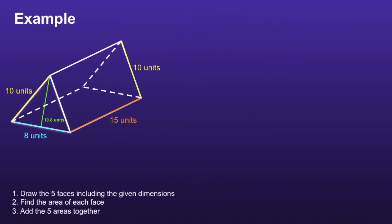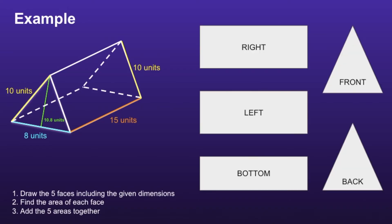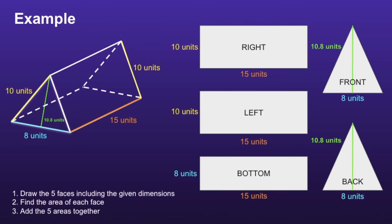There are 3 steps to find the surface area of triangular prisms. Step 1 is to draw the 5 faces, including the given dimensions. Remember that the right, left, and bottom faces are rectangles, and the front and back faces are triangles. The right and left rectangular faces have a base of 15 units and a height of 10 units. The bottom face has a base of 15 units and a height of 8 units. And the triangular faces have a base of 8 units and a height of 10.8 units.